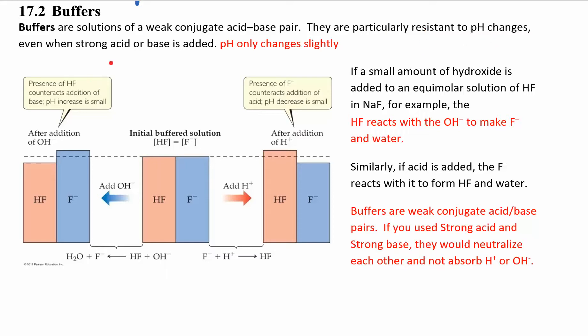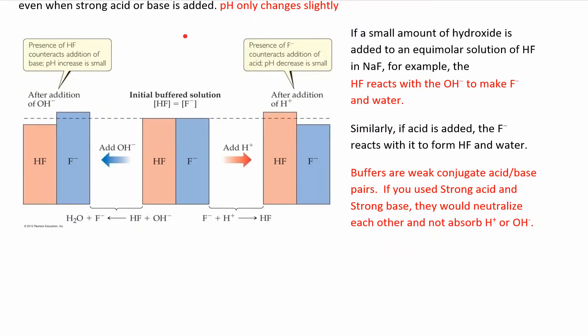Basically, if you add a strong acid or a strong base, then the weak acid or weak base in the buffer will absorb it. They're going to react with it, neutralize it, and then you see really minor changes in the pH. So we have a lot of buffers in our body. We have blood buffers to keep the pH in your blood constant, and we'll see a bunch of examples of these.